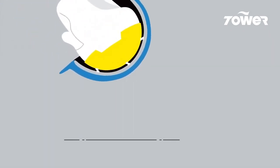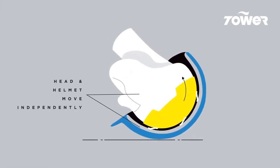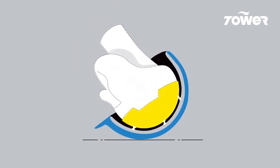When the MIPS low friction layer moves during the critical milliseconds of an impact, it allows the helmet to rotate independently from the head. This can reduce and redirect some of the rotational motion that would otherwise be translated to the brain.